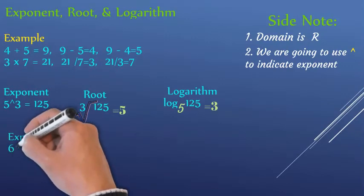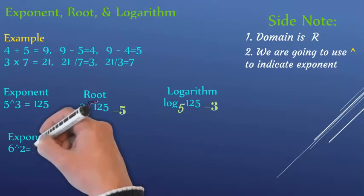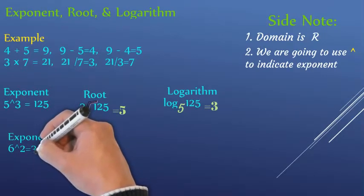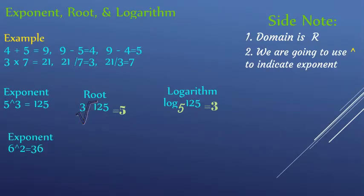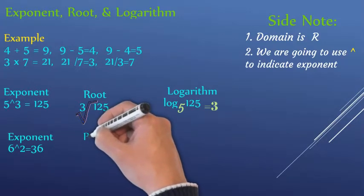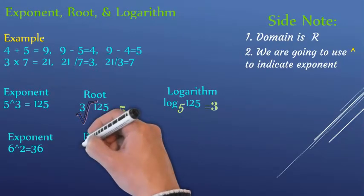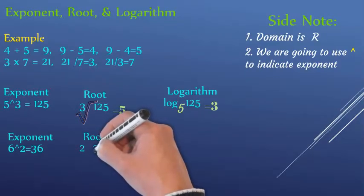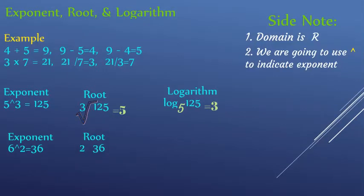Let's say we have six to the power of two — six squared — that gives 36. So in this case, the square root of 36: what is the square root of 36? That means when you multiply some number by itself it gets 36.